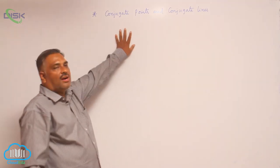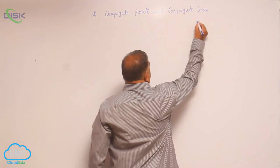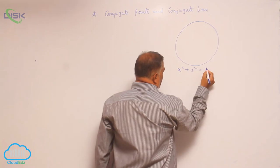Today, we will discuss about the conjugate points and conjugate lines. Now, let us take a circle equation. Let us say x square plus y square is equal to a square.